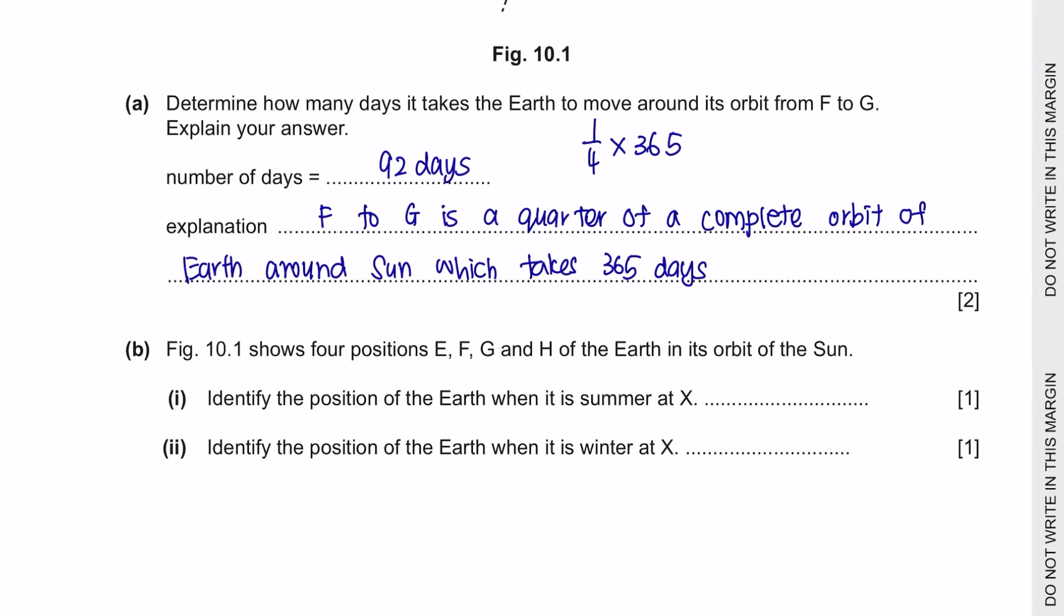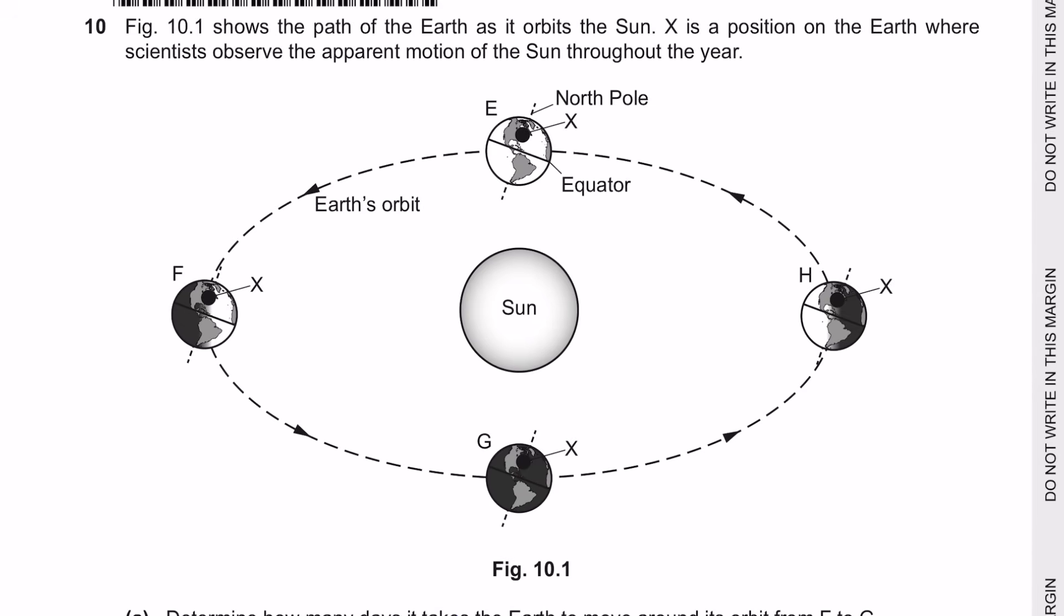Next question B. Figure 10.1 shows 4 positions E, F, G and H and we are asked to identify the position of the earth when it is summer at X and winter at X. And actually, we can see it from the diagram that at position E, X is the brightest. So this indicates that over here is summer and the opposite over here is the winter.